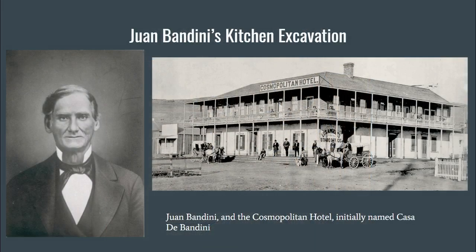Juan Bandini, pictured here on the left, was an important figure of historical San Diego. In 1829, Juan constructed the Casa de Bandini, which was his house and store, eventually converting into a restaurant and hotel in 1869, when it was renamed the Cosmopolitan Hotel. This building is on San Diego's historical register and still stands as a restaurant and hotel in Old Town San Diego today.